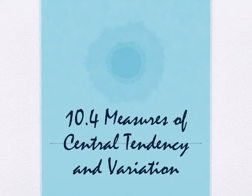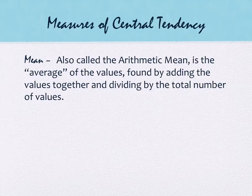So the first measure of central tendency you've used a lot in your life is called the mean. It's also called the arithmetic mean. This is the average of the values, and you find it by adding all the values together and dividing by the total number of values.